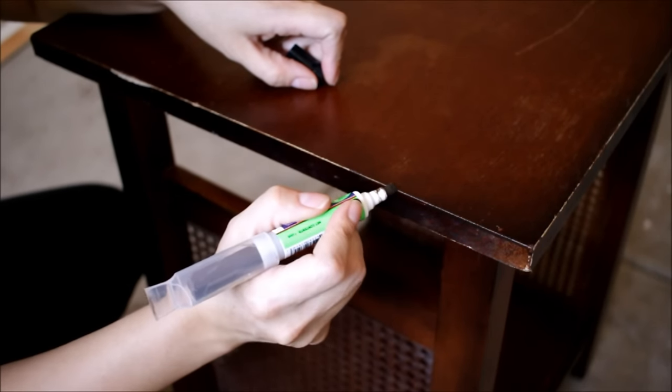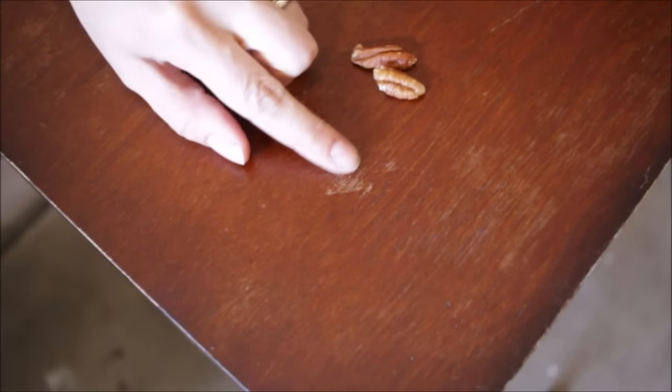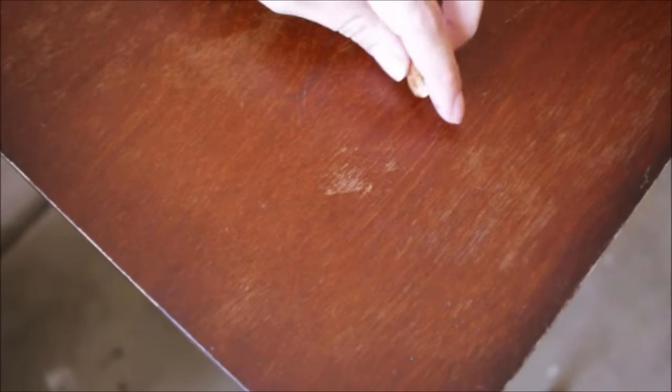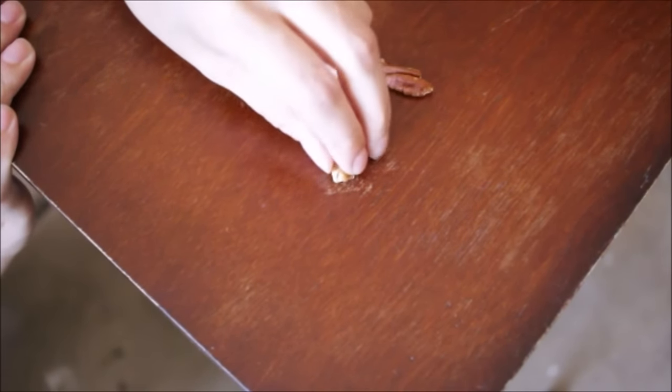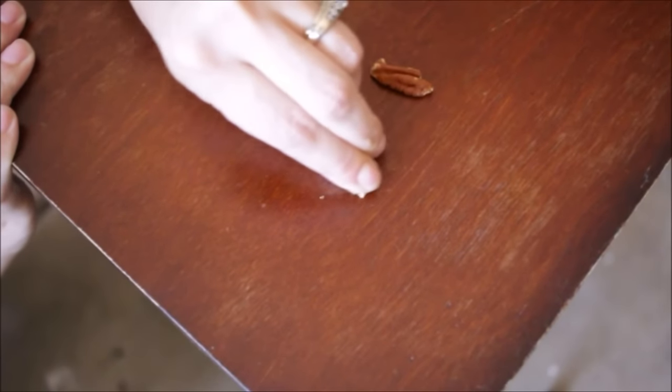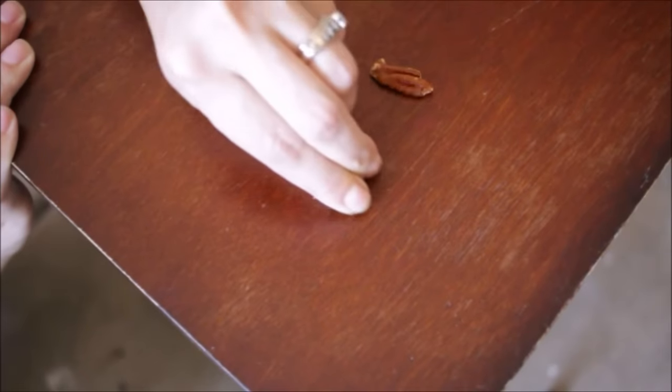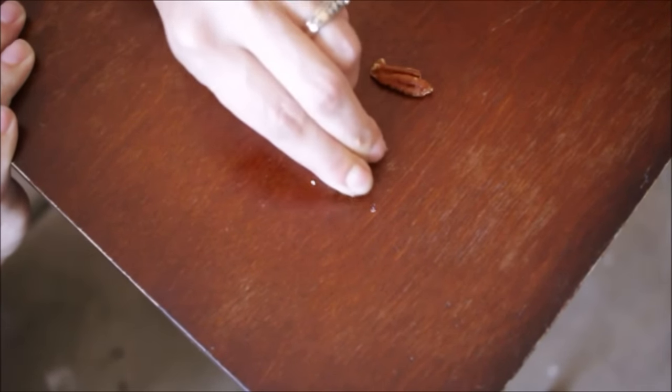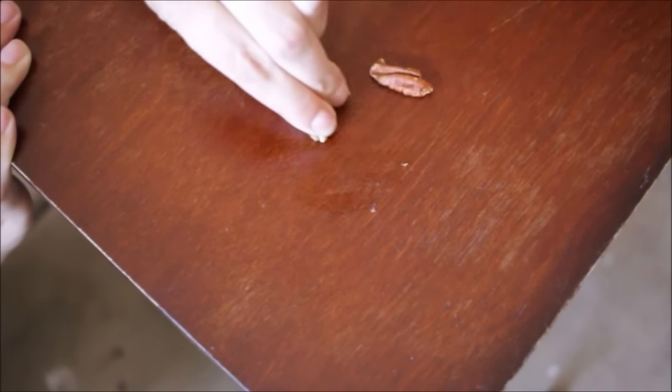For small scratches and wear, amazingly, you can use a soft nut like a walnut or a pecan. All you do is just rub the nut firmly over the affected area and watch it disappear. Although this works really well, I've noticed that it really only works on real wood furniture, so if you want to fix your laminate furniture, you might need to try something else.